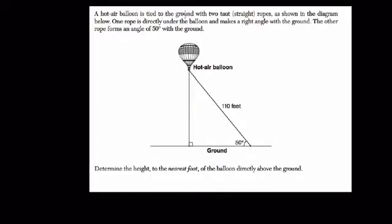Here we're told that a hot air balloon is tied to the ground with two taut straight ropes as shown in the diagram below. Here's the hot air balloon, and I always like to just draw out what they're saying so I can keep track of the problem. So the two taut ropes are these two lines right here.